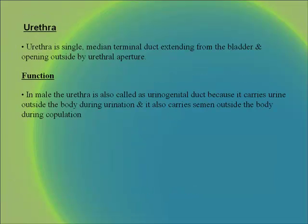The urethra is a single median terminal duct extending from the bladder and opening outside by the urethral aperture. In the male, the urethra is also called the urinogenital duct because it carries urine outside the body during urination and also carries semen outside the body during copulation.